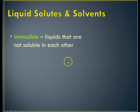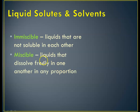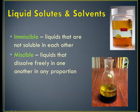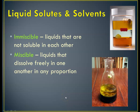What about liquid solutes and solvents? When both the solute and solvent are liquid, we talk about whether something is immiscible — liquids not soluble in each other, like oil and water — or miscible — liquids that dissolve freely in one another in any proportion. An example of miscible liquids is isopropyl alcohol: the rubbing alcohol in your medicine cabinet is isopropyl in water, about a 25% solution. Oil and vinegar don't mix — those are immiscible — and multiple liquids can be aligned by density but still not be soluble in one another.